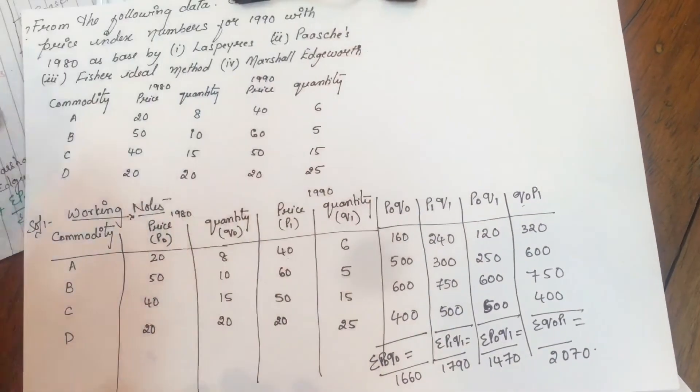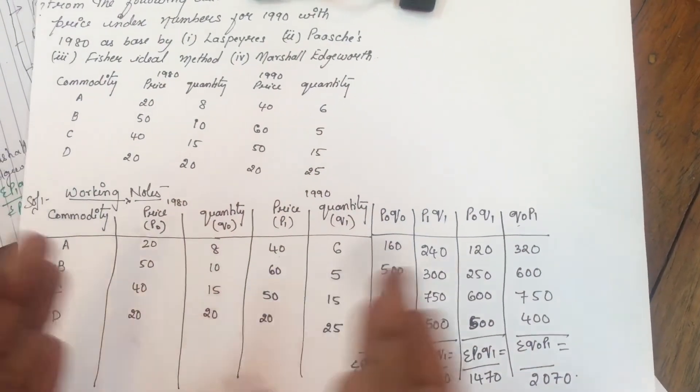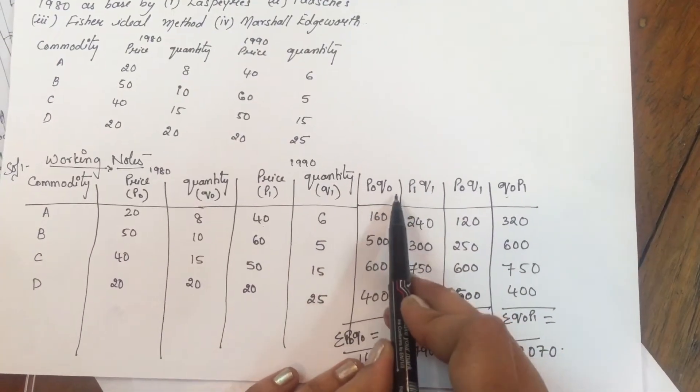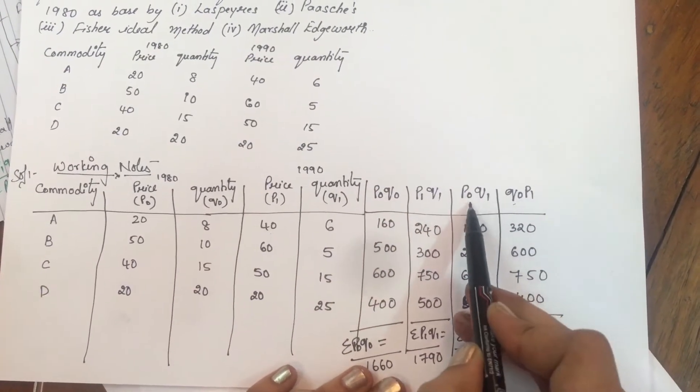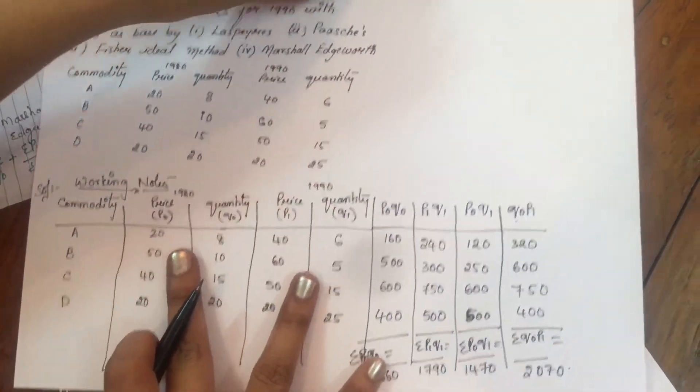This is our working note. This part is given in the question, we have calculated four things: P0 Q0, P1 Q1, P0 Q1, and Q0 P1.